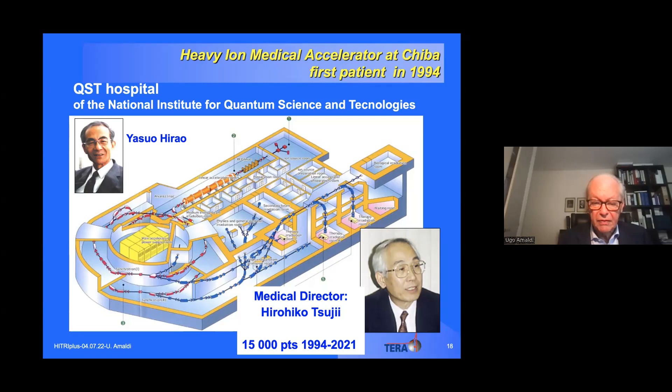When we started — Kraft at GSI and myself at CERN — the basis was indeed Berkeley, but Berkeley had treated patients only with helium. The primary source of clinical information was HIMAC in Japan. Those synchrotrons were originally designed for nuclear physics rather than medical treatment, so they are much larger than necessary — 40 meters radius — which is not required for therapy.